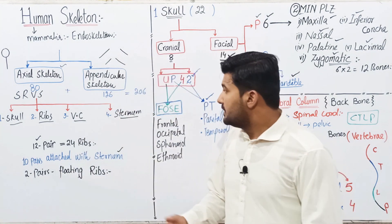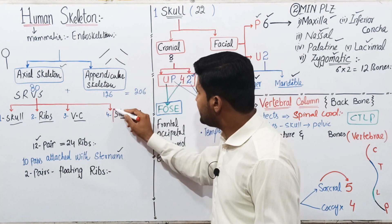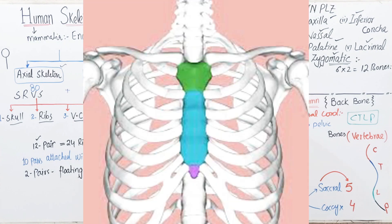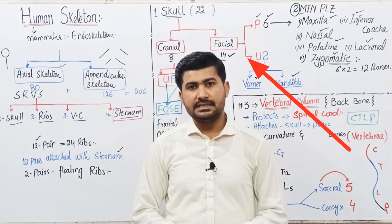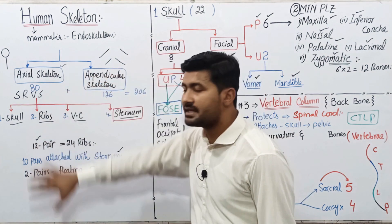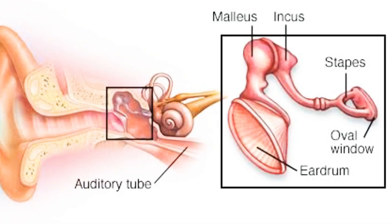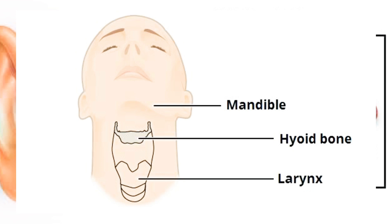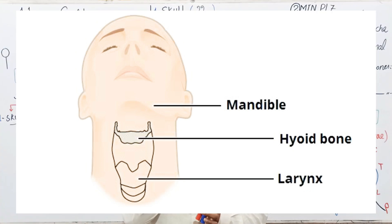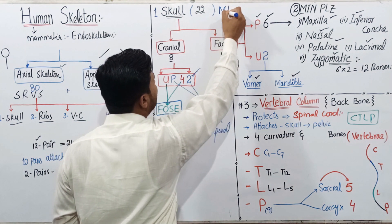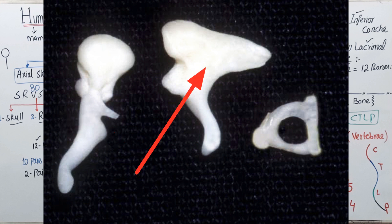The sternum is the chest bone, providing the site of attachment for the ribs and the clavicle. There are also ear bones and the hyoid bone in the neck, which are not in our syllabus. The three ear bones are remembered by MIS: M for malleus, I for incus, and S for stapes.